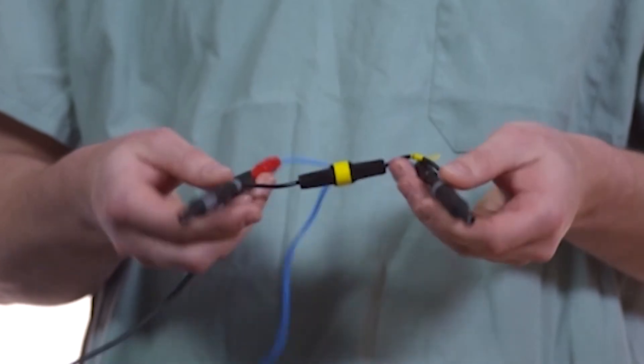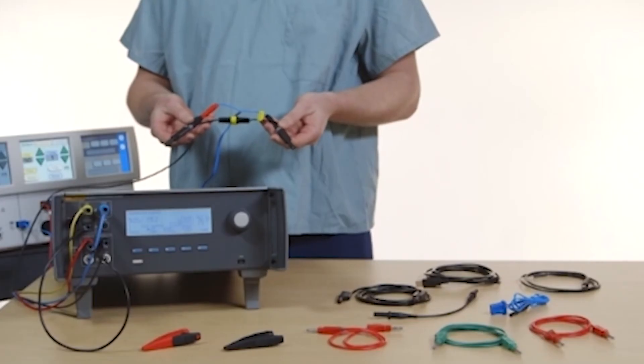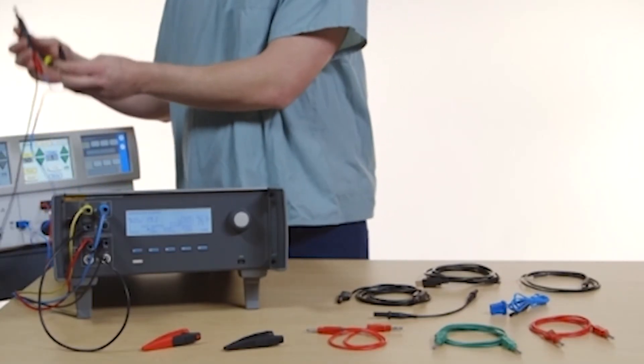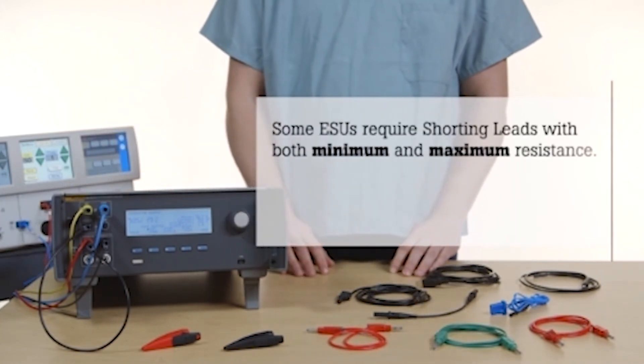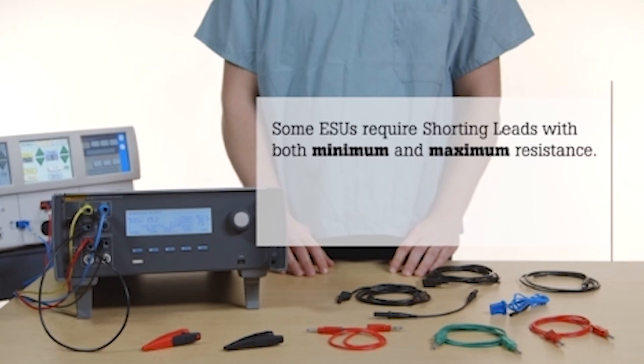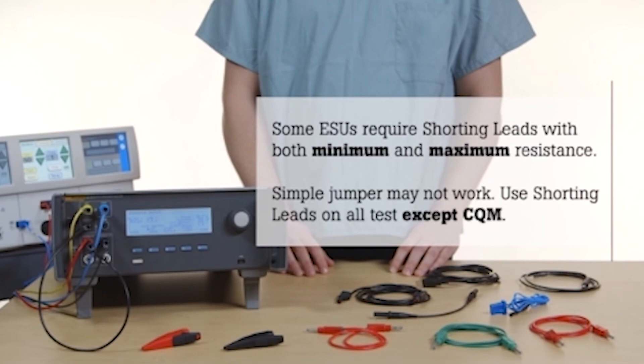The shorting leads, supplied with the QAES3, have a resistance that is sufficiently low to prevent an alarm on the ESU. Some ESUs, however, require the shorting lead to have a minimum resistance as well as a maximum resistance. A simple jump may not work. Use the shorting leads for all measurements except the CQM test.